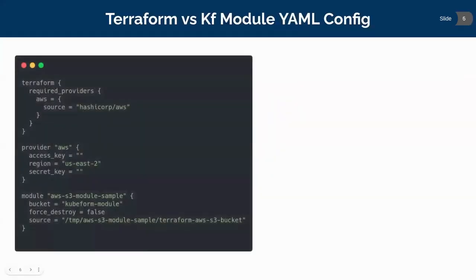This is the Terraform configuration using a module whose source is in a local directory slash TMP folder. In this Terraform module configuration, we can see the first block is the Terraform block for AWS, which sources HashiCorp AWS and needs to be provided as required providers.